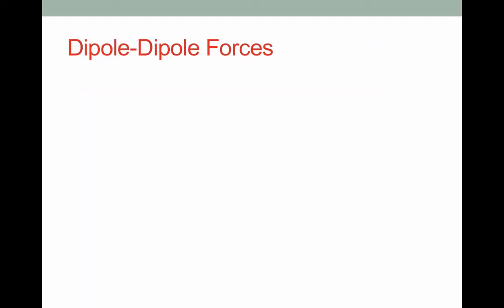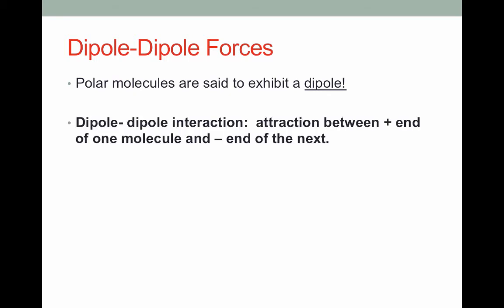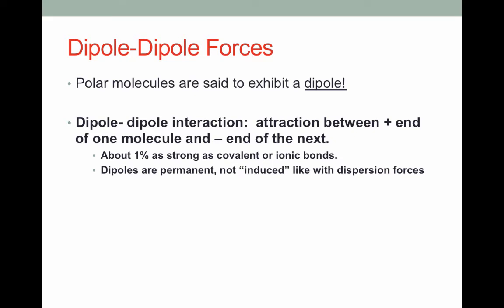Moving on to the next stronger intermolecular force: dipole-dipole interactions. Recall that polar molecules are said to exhibit a dipole — an area of positive charge and an area of negative charge. Dipole-dipole interactions occur when the positive end of one molecule attracts the negative end of a neighboring molecule. These are weaker than covalent and ionic bonds — about 1% as strong — but much stronger than dispersion forces. Unlike dispersion forces, which are temporary and induced, dipoles are permanent; you'll always have a dipole within the molecule.